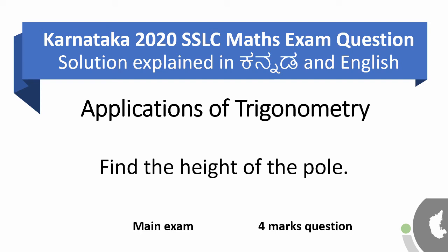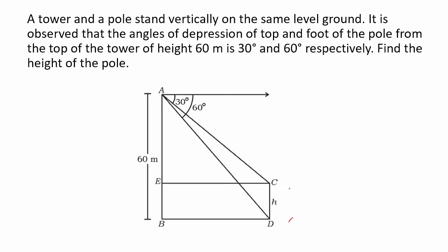Let us try and solve an application of trigonometry question. A tower and a pole stand vertically on the same level ground — one tower and one pole.